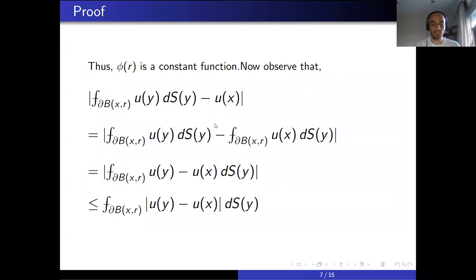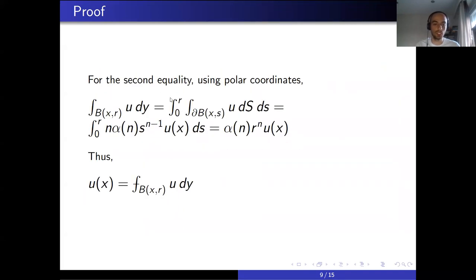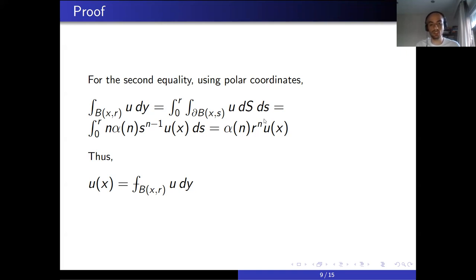For the second part of the equality, we consider the integral over the ball and use n-dimensional polar coordinates. The inner integral is what we just proved — multiplying by the necessary constant — and this second integral is very easy to evaluate. We arrive at a constant which is the volume of the n-dimensional ball with radius r. In total, we have shown our desired equality.